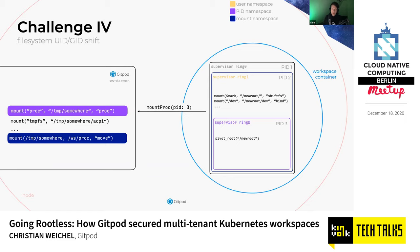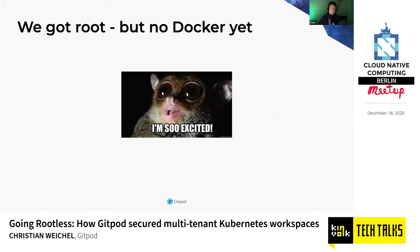We solve this pretty much the same way we solved all the other privileged operations: we call out to workspace daemon, have it mount proc for us, put all the masks on top, and then move this mount into the designated mount namespace. At this point, we have root for all intents and purposes — we can do apt-get install something. We don't have Docker yet, though.